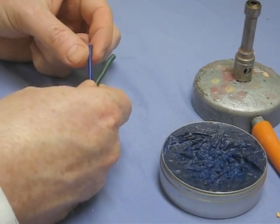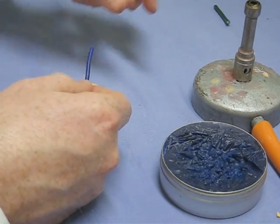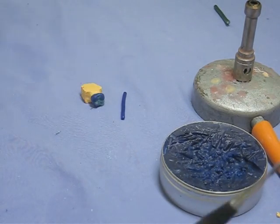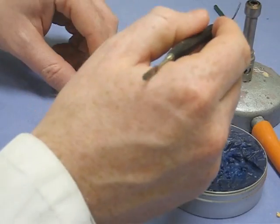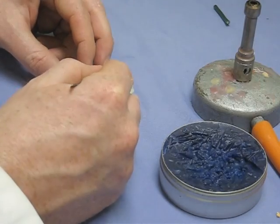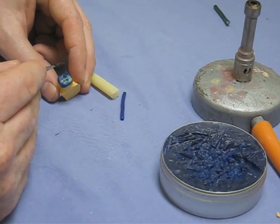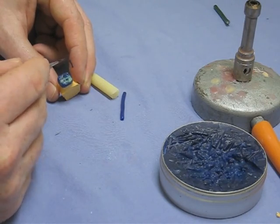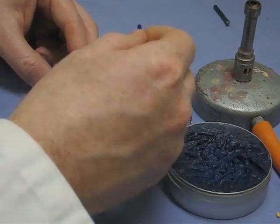A couple of spruing waxes here just to show you the different sizes. With the gold we can use the thin spruing wax because it flows readily. We're going to use a little bit of sticky wax just on one of the cusps to stick the spruing wax to.